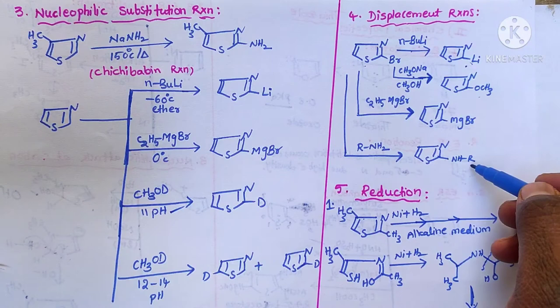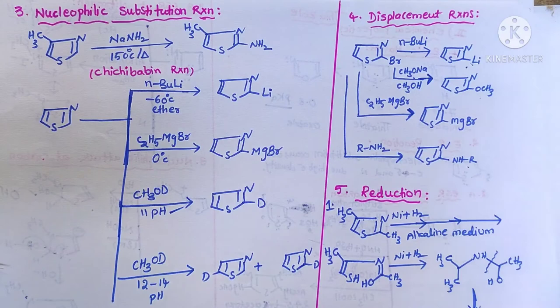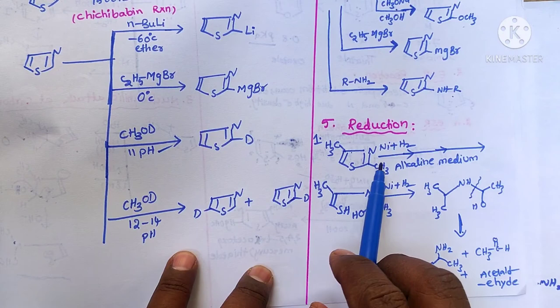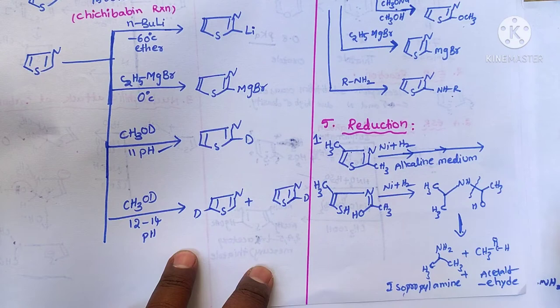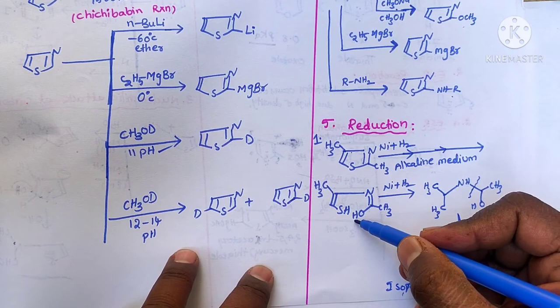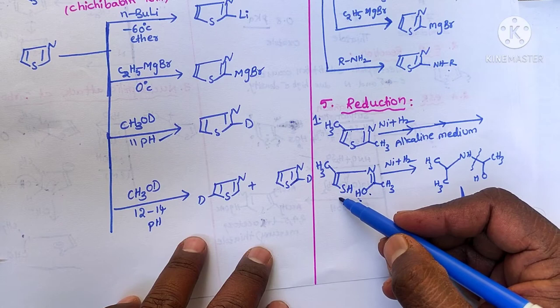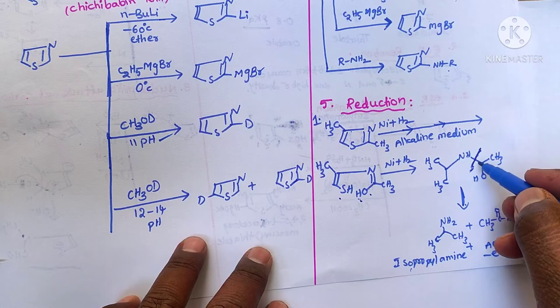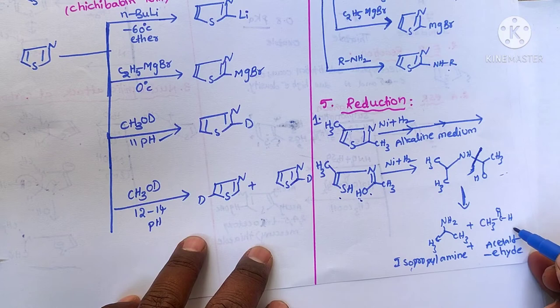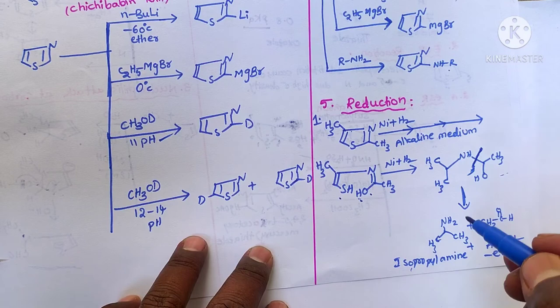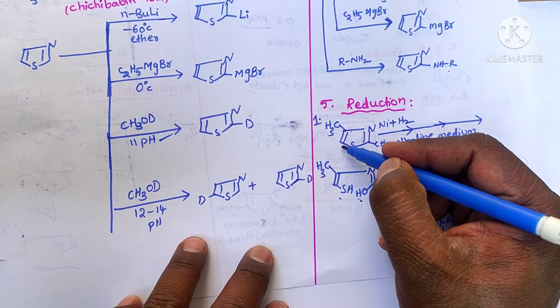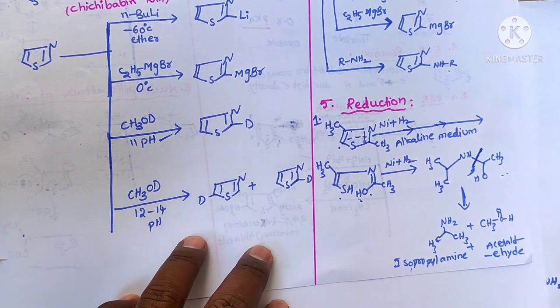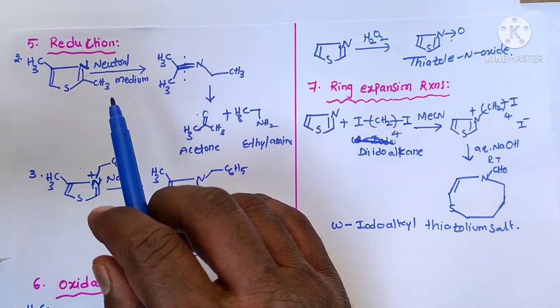Now we go for reduction reactions. When a thiazole derivative is treated with nickel and hydrazine in alkaline medium, first ring opening takes place giving an enol group and an enethiol group. After that further reduction takes place and we get a saturated compound. Further reduction breaks the compound and we get isopropylamine and acetaldehyde as products.